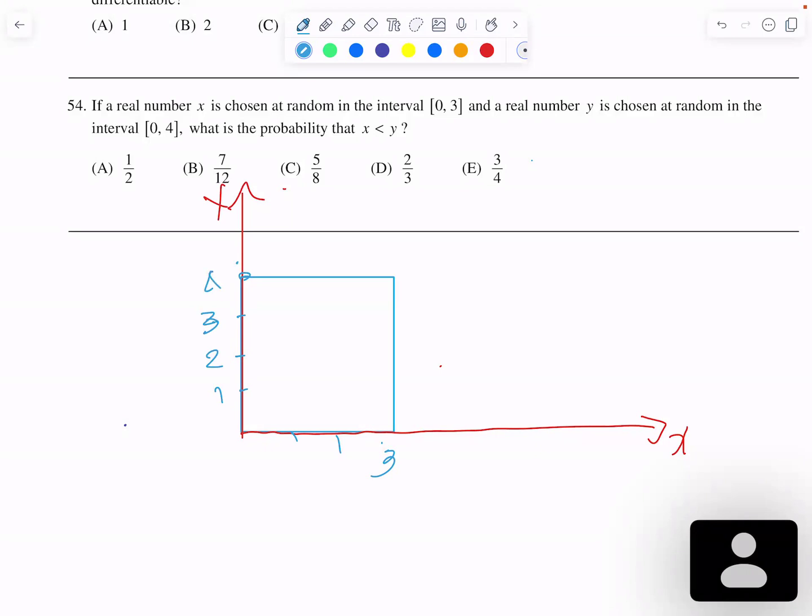Now they say that the Xs are between 0 and 3, and the Y is between 0 and 4. But we need to find the probability that Y is greater than X. If we draw the line Y equal to X, we have 1, 2, 3 here. We need to find the probability that the random point in this rectangle is going to be above this line, which is going to be in that region. Now it's easy to find.